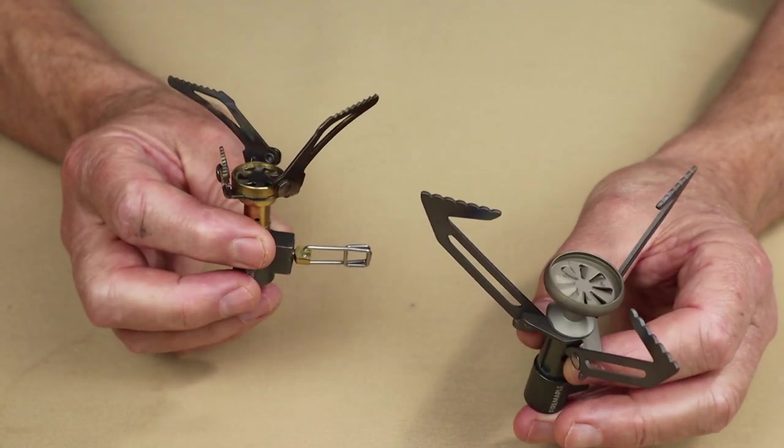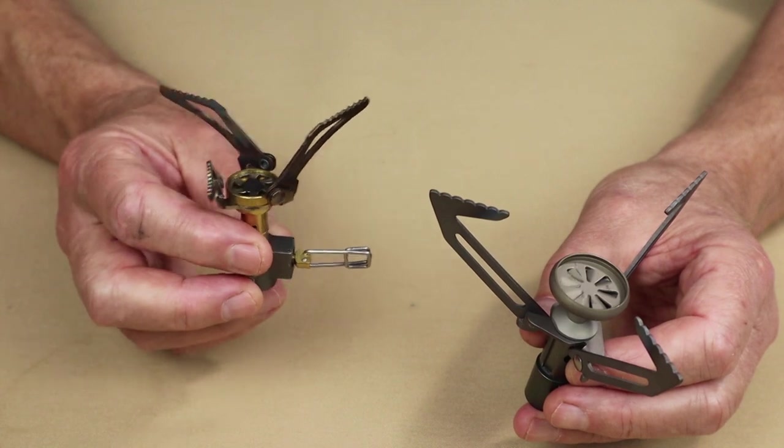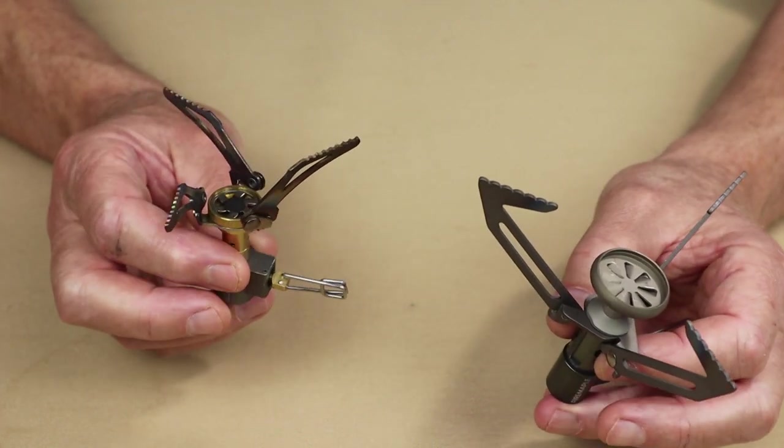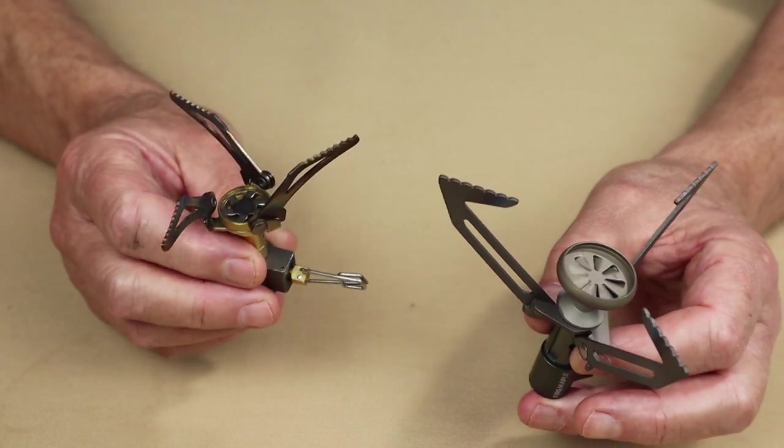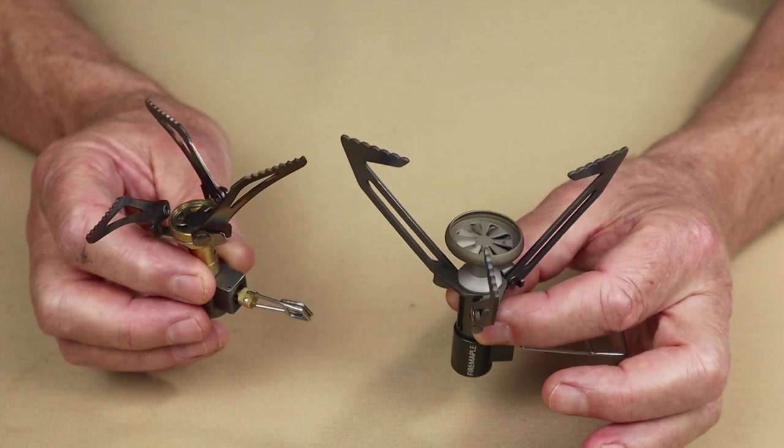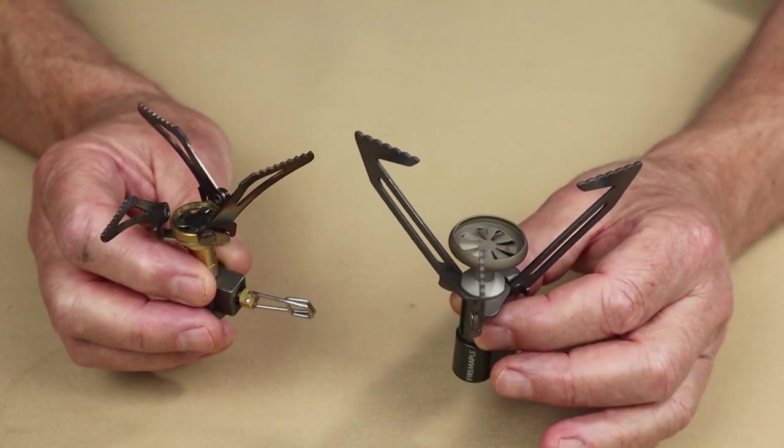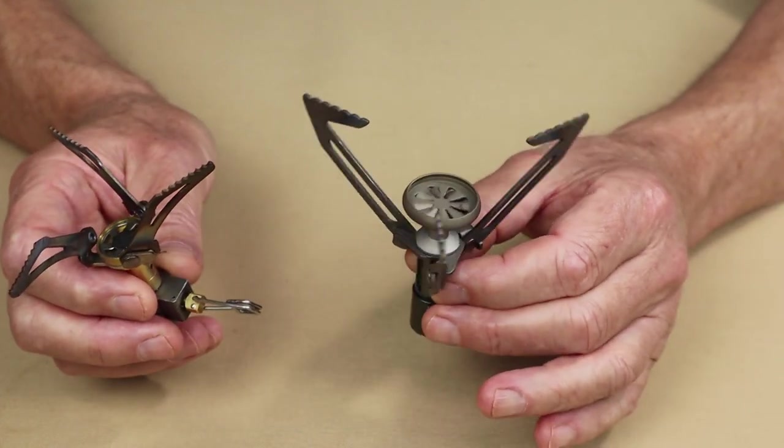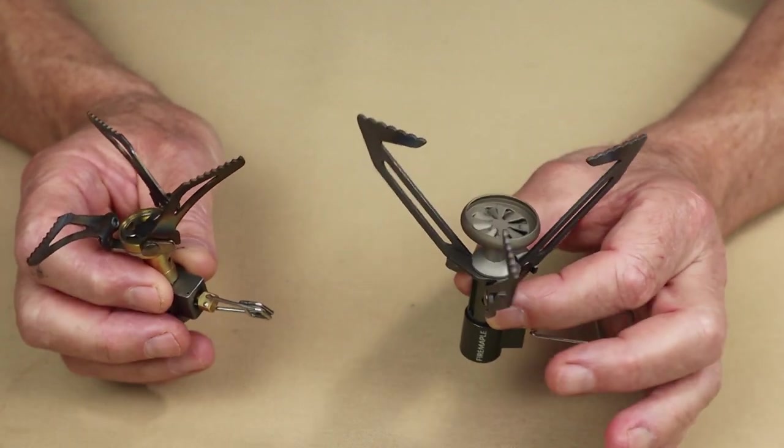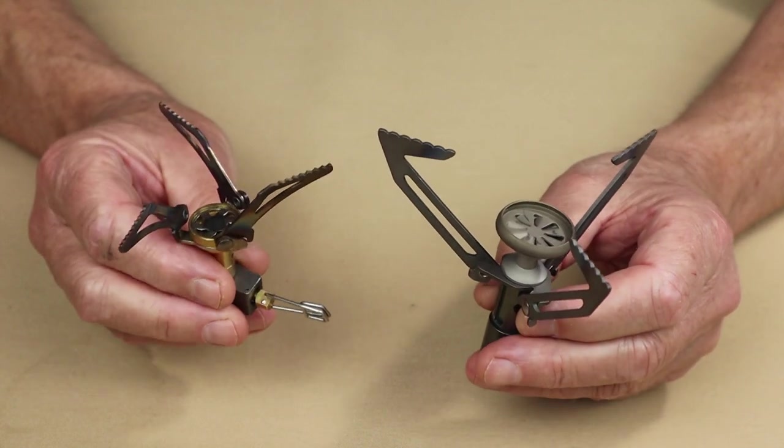People tend to use them only for boiling water, for things like instant meals. Rarely do people use these for frying with or trying to simmer with. Both of them have good flame adjustment, and I'll show you that as well. I'll take it down and turn it back up again. But as an alternative, as you'll see, I prefer the Hornet 2 because there's a number of reasons, but the flame pattern is just that much better.